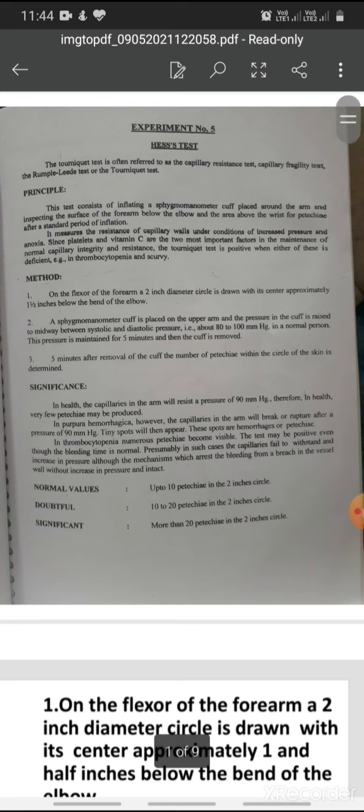The tourniquet test is positive when either of these is deficient. If platelets are deficient, we call this condition thrombocytopenia, and scurvy is vitamin C deficiency.